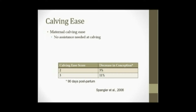There are two kinds of calving ease EPDs: calving ease direct and calving ease maternal. Most people understand calving ease direct, but if you're somebody that generates your own replacement females you need to pay attention to calving ease maternal when selecting sires. Calving ease scores were combined into three categories: one required no assistance, two required some assistance, and three required a great deal of assistance and possibly a cesarean section. Cows that required a lot of assistance at calving were 11 percent less likely to conceive 90 days postpartum. So calving ease is economically important not only due to labor required and possible cow or calf mortality, but because surviving cows can have decreased reproductive success.